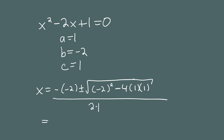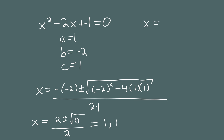So we have x equal to 2 plus or minus the square root of — if you compute the number under the radical — you get 4 minus 4, which is 0. And that's all over 2. Whether you do it with a plus sign or a minus sign, in both cases you get 2 plus 0 over 2, which is 1, or 2 minus 0 over 2, which is also 1. So the two solutions to this quadratic equation are 1 and 1. In this case, you say the solution is 1 and it's a double root.